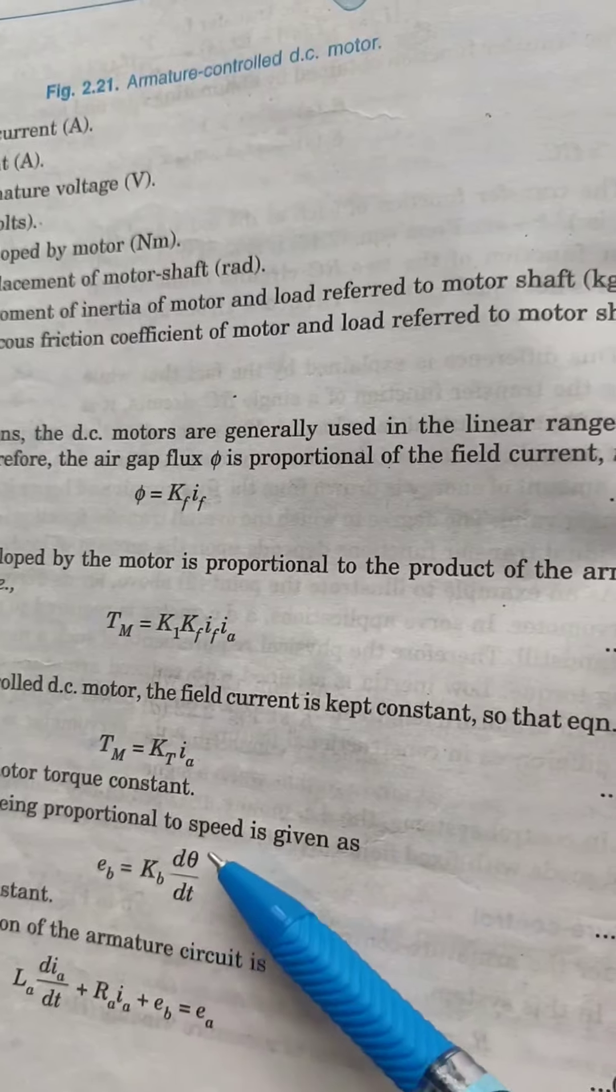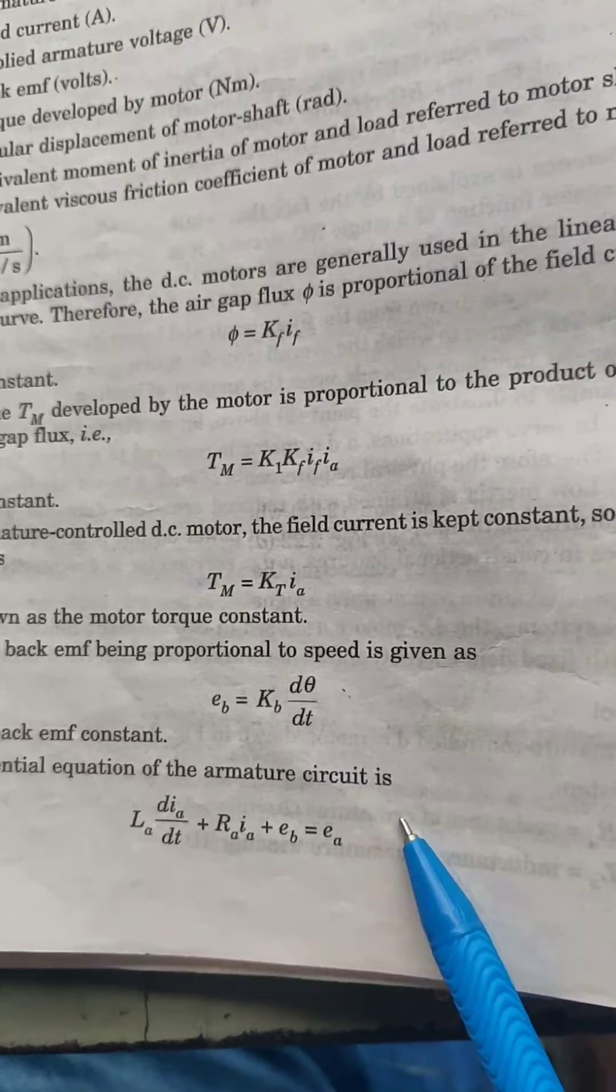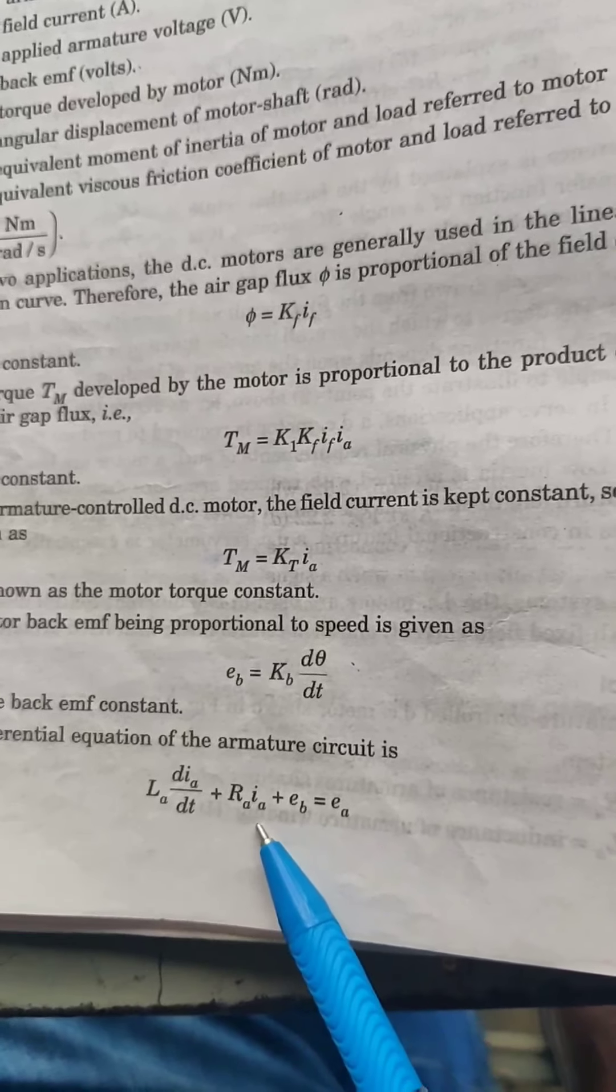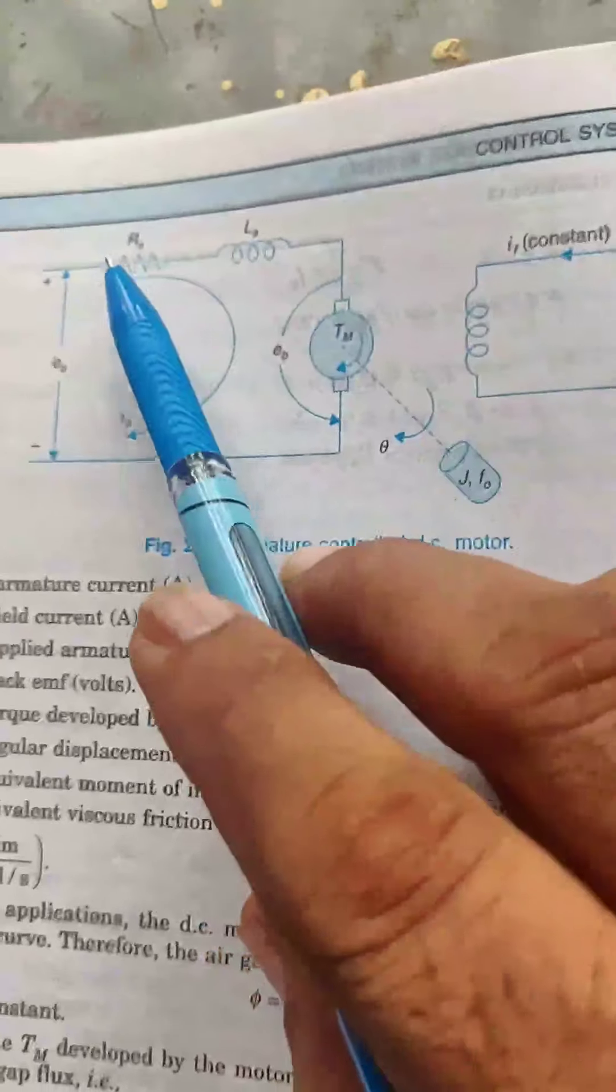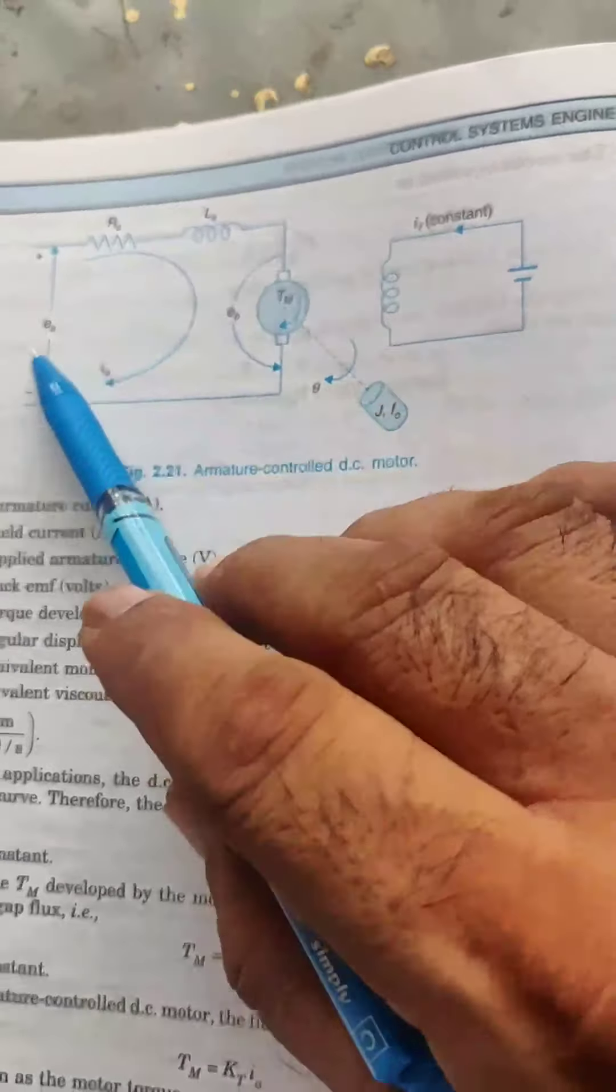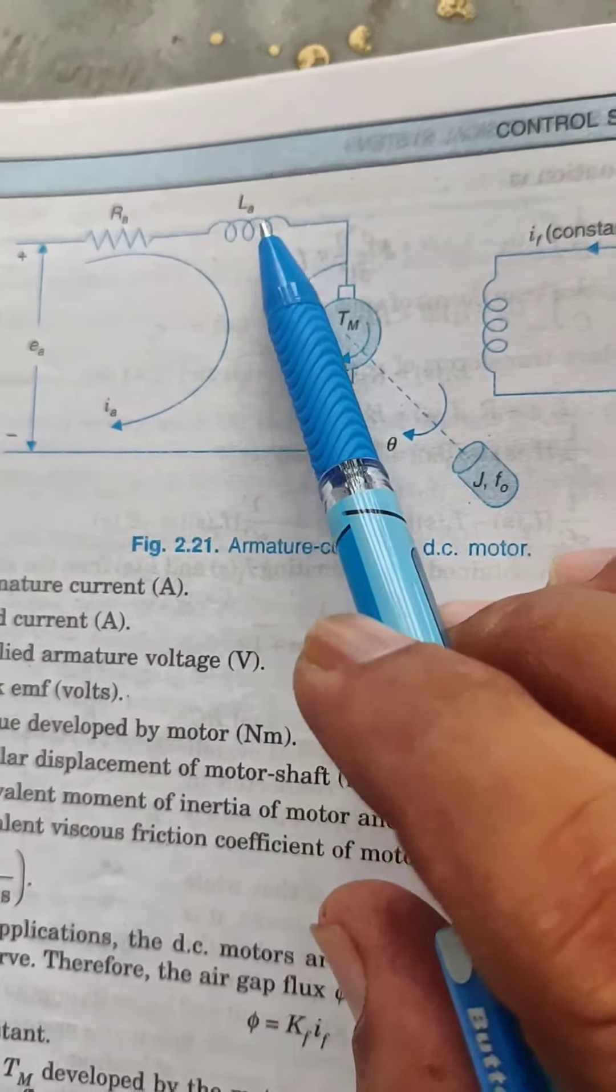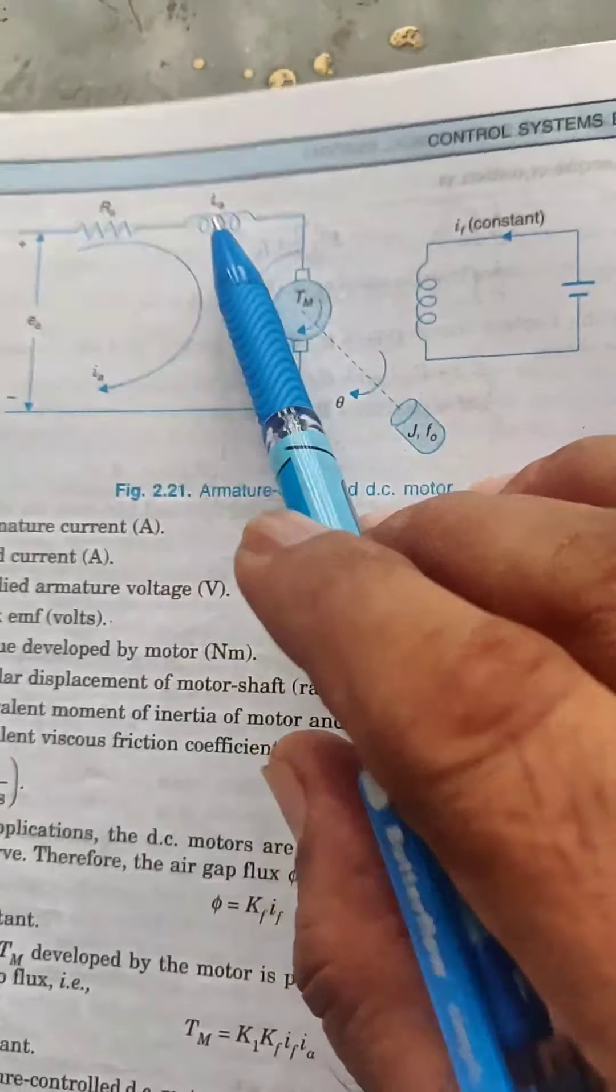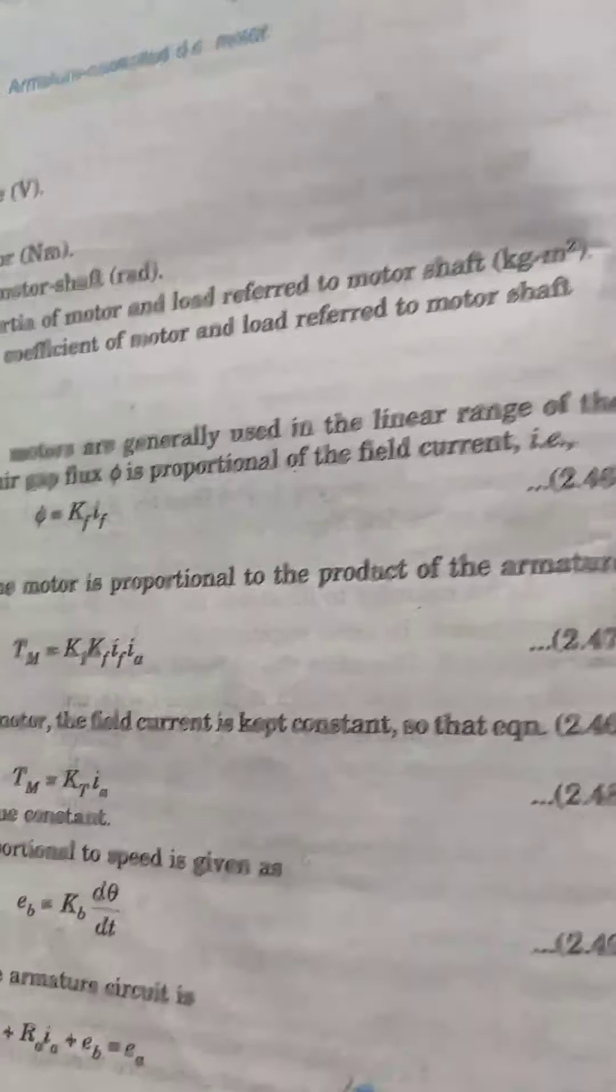Now write down the differential equation of the armature circuit. Input voltage EA equals back EMF plus IA RA drop and LA dIA by dt is the inductance drop. Here Kirchhoff's voltage law is applied. EA equals IA RA plus LA dIA by dt plus EB.